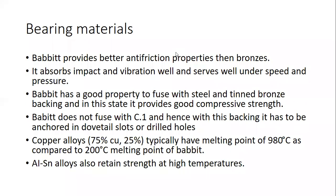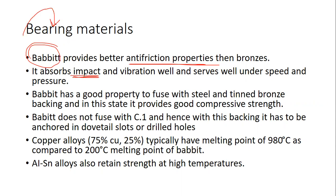Babbitts are the most frequently used bearing materials in sliding contact bearings. This is very important because Babbitts have anti-friction properties, which is central to hydrodynamic bearings where we use coefficient of friction and find power lost in friction. Babbitts have better anti-friction properties than bronzes, which is why they are more preferred. They absorb impact load, absorb and sustain vibration, and perform well under high speed and high pressure.